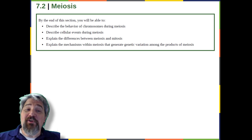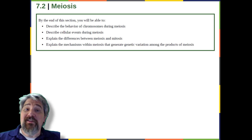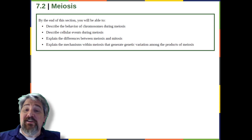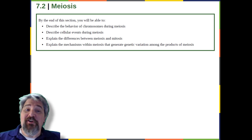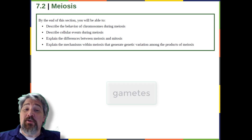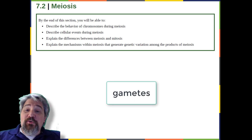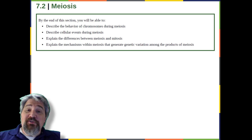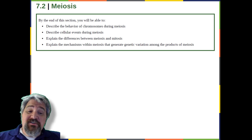Homologous chromosomes are matched pairs containing genes for the same traits in identical locations along their length. Diploid organisms inherit one copy of each homologous chromosome from each parent, altogether considered a full set of chromosomes. In animals, haploid cells containing a single copy of each homologous chromosome are found only within gametes. Gametes fuse with another haploid gamete to produce a diploid cell. The nuclear division that forms haploid cells is called meiosis, and it is related to mitosis.